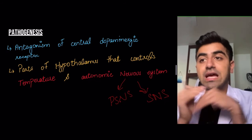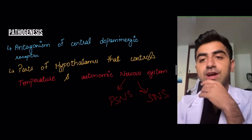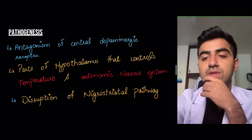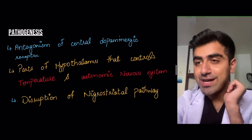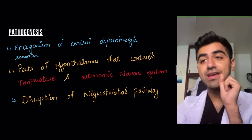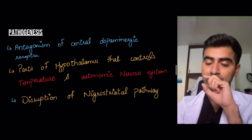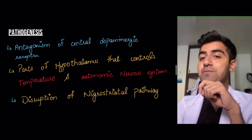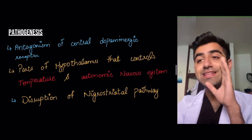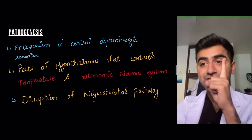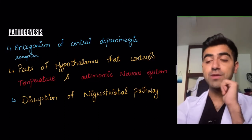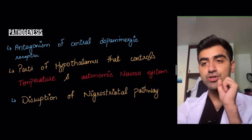What causes the lead pipe rigidity? The nigrostriatal pathway. In the basal ganglia — the set of nuclei in the brain that help with the initiation of movement — this pathway is particularly affected in Parkinson's disease. Dopamine helps initiate movement, while acetylcholine helps inhibit the initiation of movement.